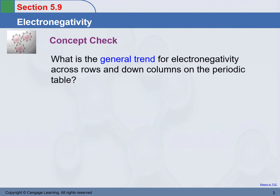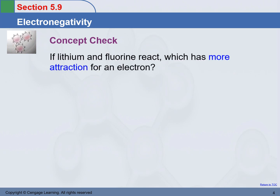What is the general trend for electronegativity across the rows and down the columns on the periodic table? Left to right across a row, electronegativity increases. Top to bottom, electronegativity decreases. Fluorine is the element that has the highest electronegativity. If lithium and fluorine react, fluorine has more attraction — it has the most attraction for electrons regardless of what it bonds with.